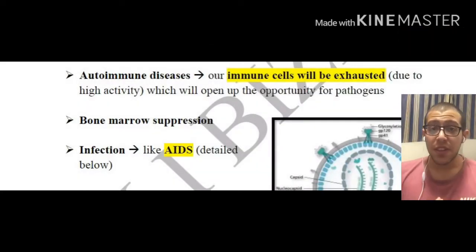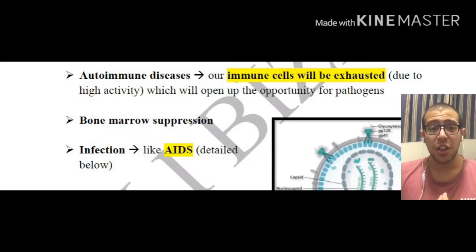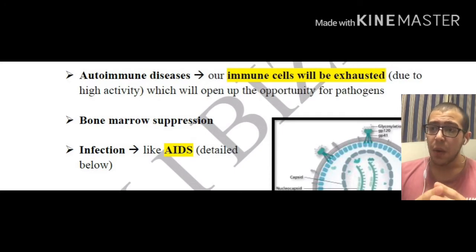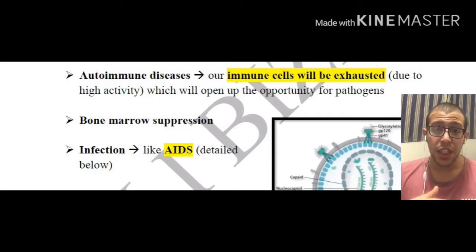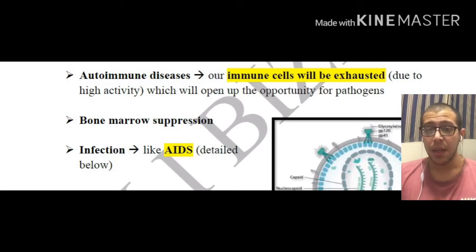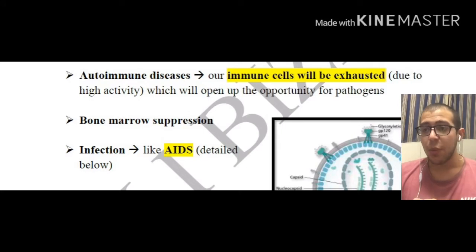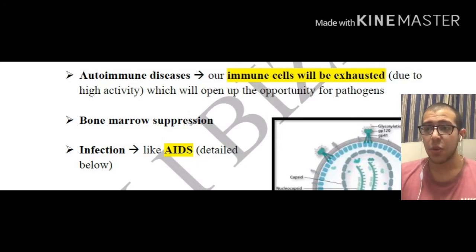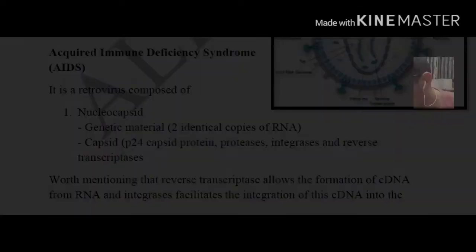Next we have autoimmune diseases. Our immune cells can become exhausted due to high activity, which renders pathogens able to infect. Then we have bone marrow suppression — also self-explanatory — and infection, such as AIDS, which we are going to detail now.